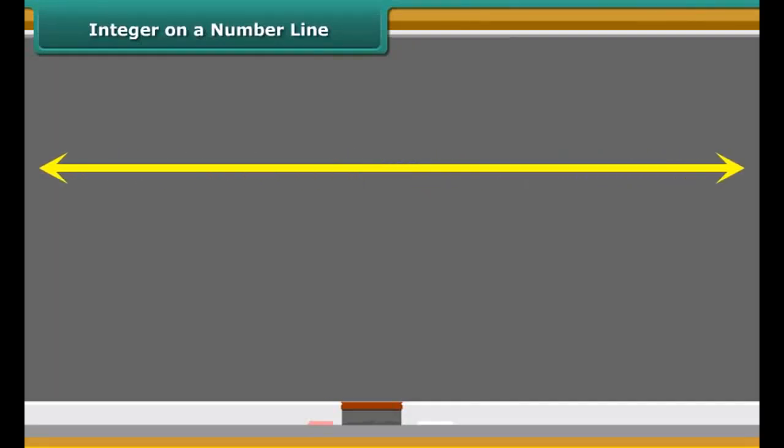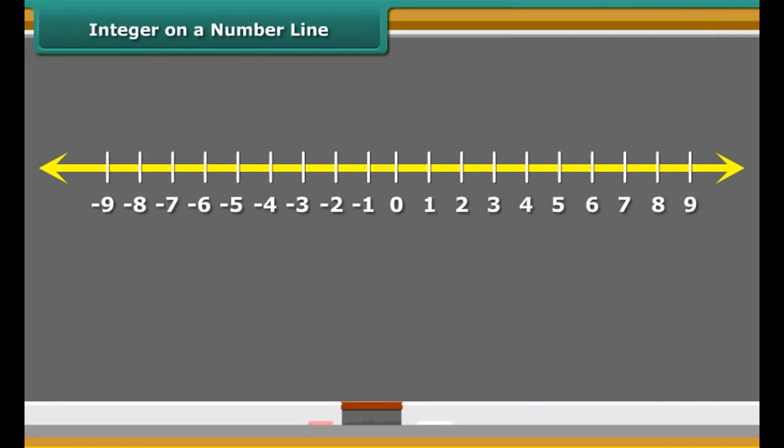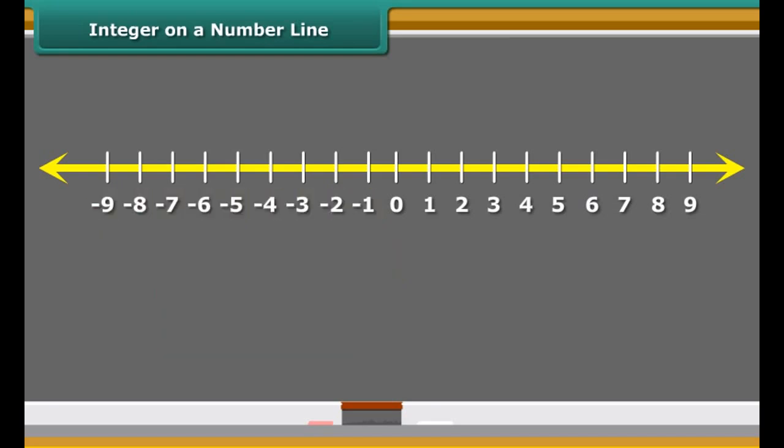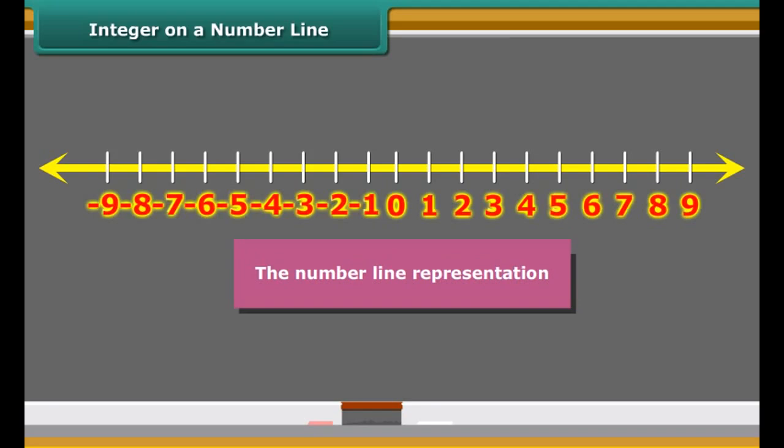This figure represents a line marked with some points at equal distance. A point on it is marked as zero. Points to the right of zero are positive integers. Points to the left of zero are negative integers and are marked minus 1, minus 2, minus 3 and so on. This type of representation of integers is called the number line representation.